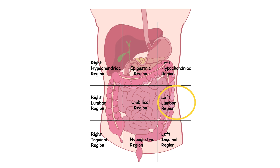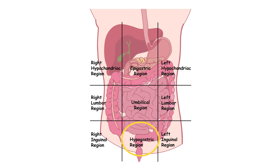The right iliac region, also called the right inguinal region, includes the appendix and cecum. The hypogastric region, or pubic region, includes the urinary bladder and reproductive organs. The left iliac region, also referred to as the left inguinal region, includes the sigmoid colon.